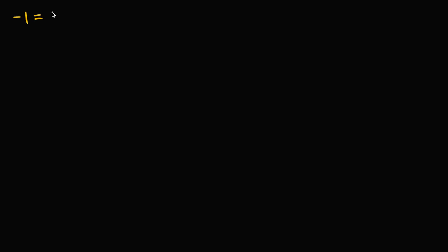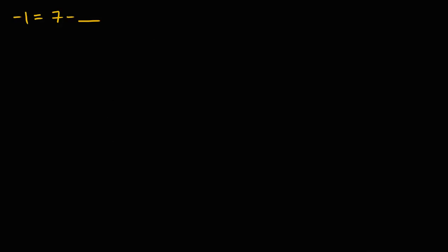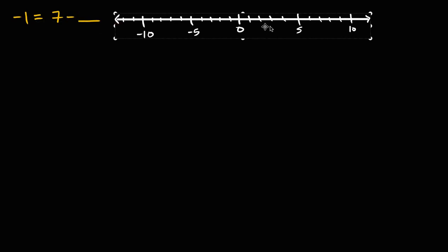If I were to say that negative one is equal to seven minus blank, what should be in that blank? What number — either positive or negative, or I guess it could be zero — would that number be? Let me put a number line right over here.